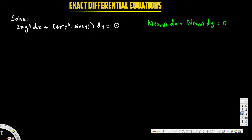Now we have to figure out which part is M(x,y) and which is N(x,y). The term in front of dx is M(x,y), so that is our M. The term in front of dy is N(x,y), so that is our N.